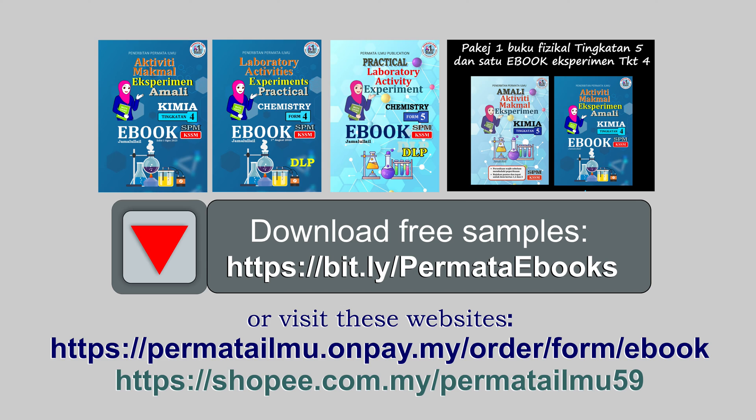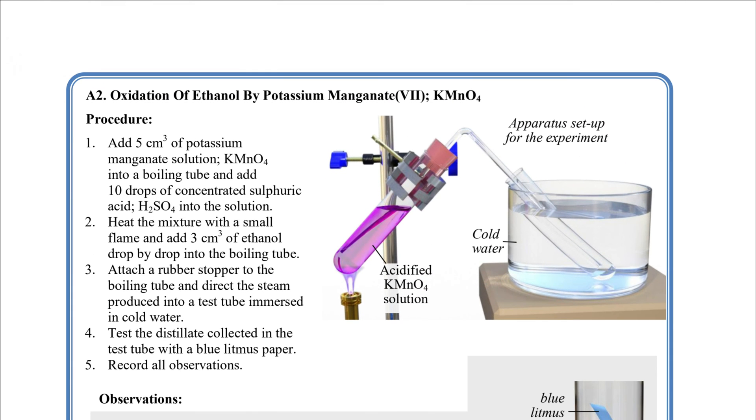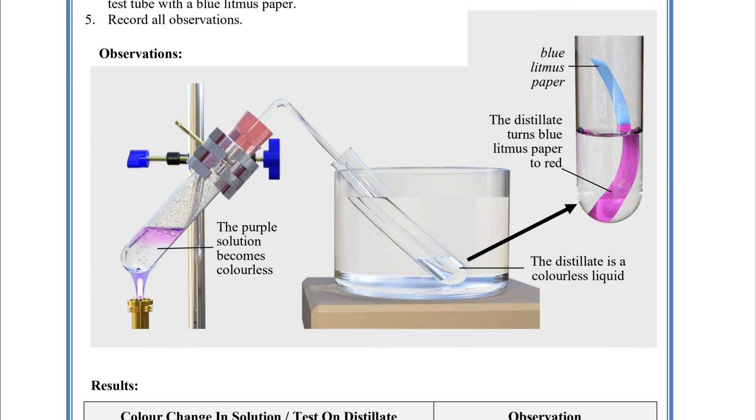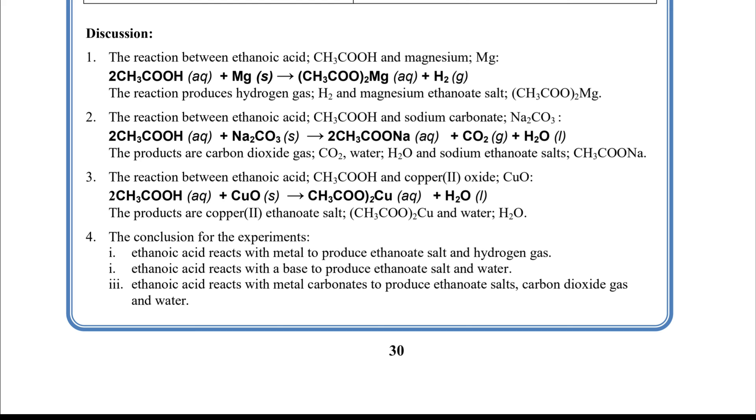And get the laboratory activity reference books on Shopee or on our website at Permata eBooks. The lab activity book contains a complete reference on the arrangement of the apparatus, observations, results table, and answers to questions related to experiments.